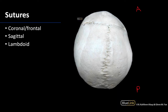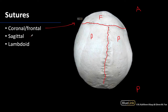We can see three sutures here. We can see this more horizontally located coronal or frontal suture that is going to be between the frontal bone and the paired parietal bones. And this suture that is running mostly down the midline between the two parietal bones will be the sagittal suture. And lastly you can see a bit of the lambdoid or lambdoidal suture that is going to be between the paired parietal bones as well as the occipital bone.